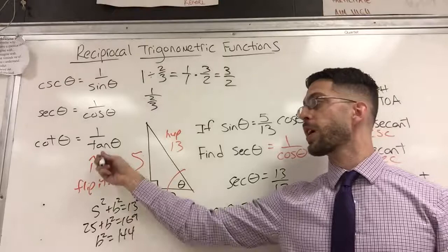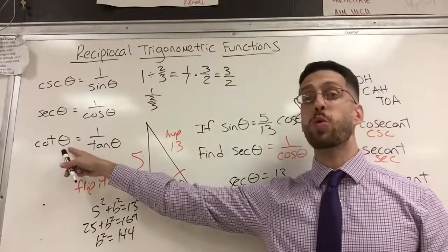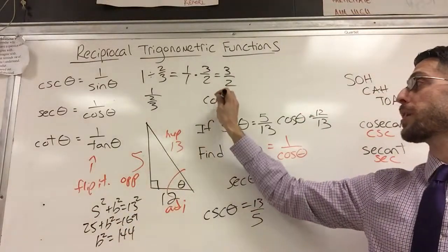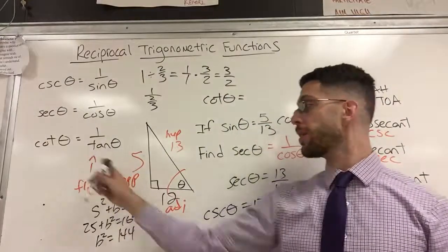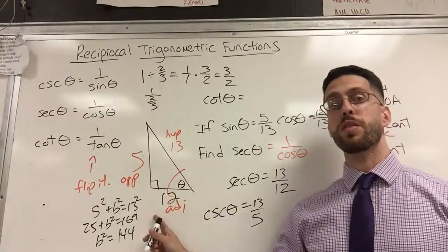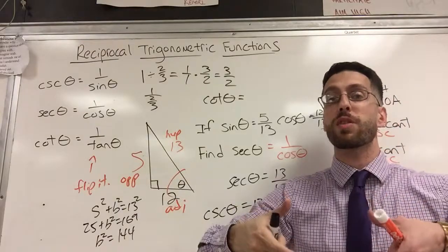What if they confused you and asked you for the cotangent? What if they asked for the cotangent of theta? Well, then you would have to first figure out the tangent of theta, which is opposite over adjacent 5 over 12, and then flip that giving you 12 over 5.